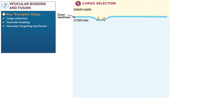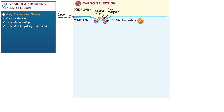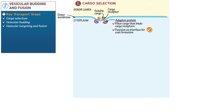Next, draw cargo receptors on the curved portion of the membrane. Show that they bind soluble cargo — they specifically bind the signal sequences of secretory proteins that are sorted for export from the donor compartment. Next, draw adapter proteins that bind to the cytoplasmic side of the cargo receptors. Write that adapter proteins help filter the cargo that binds cargo receptors, and they function as an interface for coat formation, which we'll illustrate shortly.